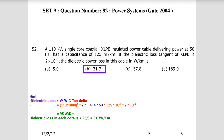In this question, the voltage of the system, the capacitance, and the dielectric loss tangent are all given. Using dielectric loss = V²ωC tan δ, with V = 110 kV, ω = 2πf, and substituting tan δ, then dividing by 3 for each core gives the answer: 31.7 watt per kilometer.